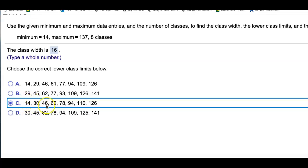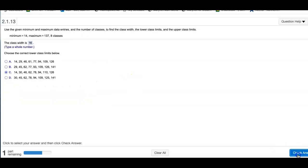And they have 1, 2, 3, 4, 5, 6, 7, 8 lower class limits listed, just like they wanted 8 classes. Check answer.